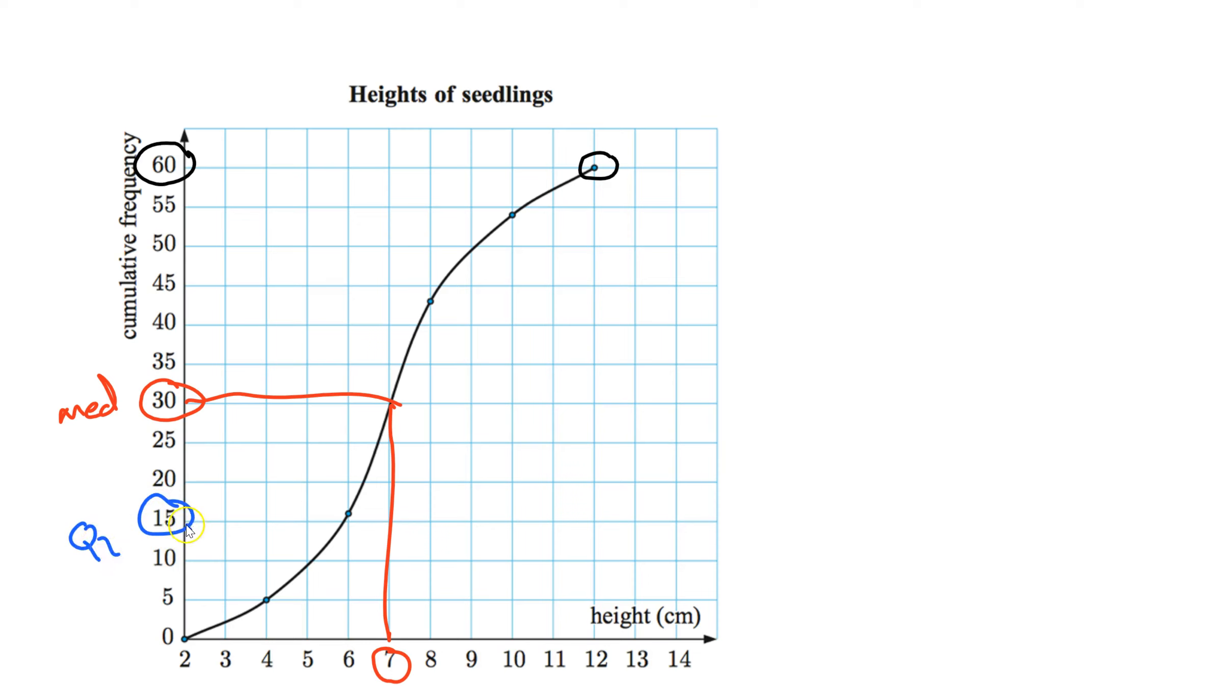Q1 or lower quartile. Go across, terrible line. Go down, so it should be around 6. The upper quartile, or the median of the top half would be between 60 and 30, so 45. That'd be Q3. You're going to go across, go down, and then you just kind of estimate, it looks like 8.4 or something.